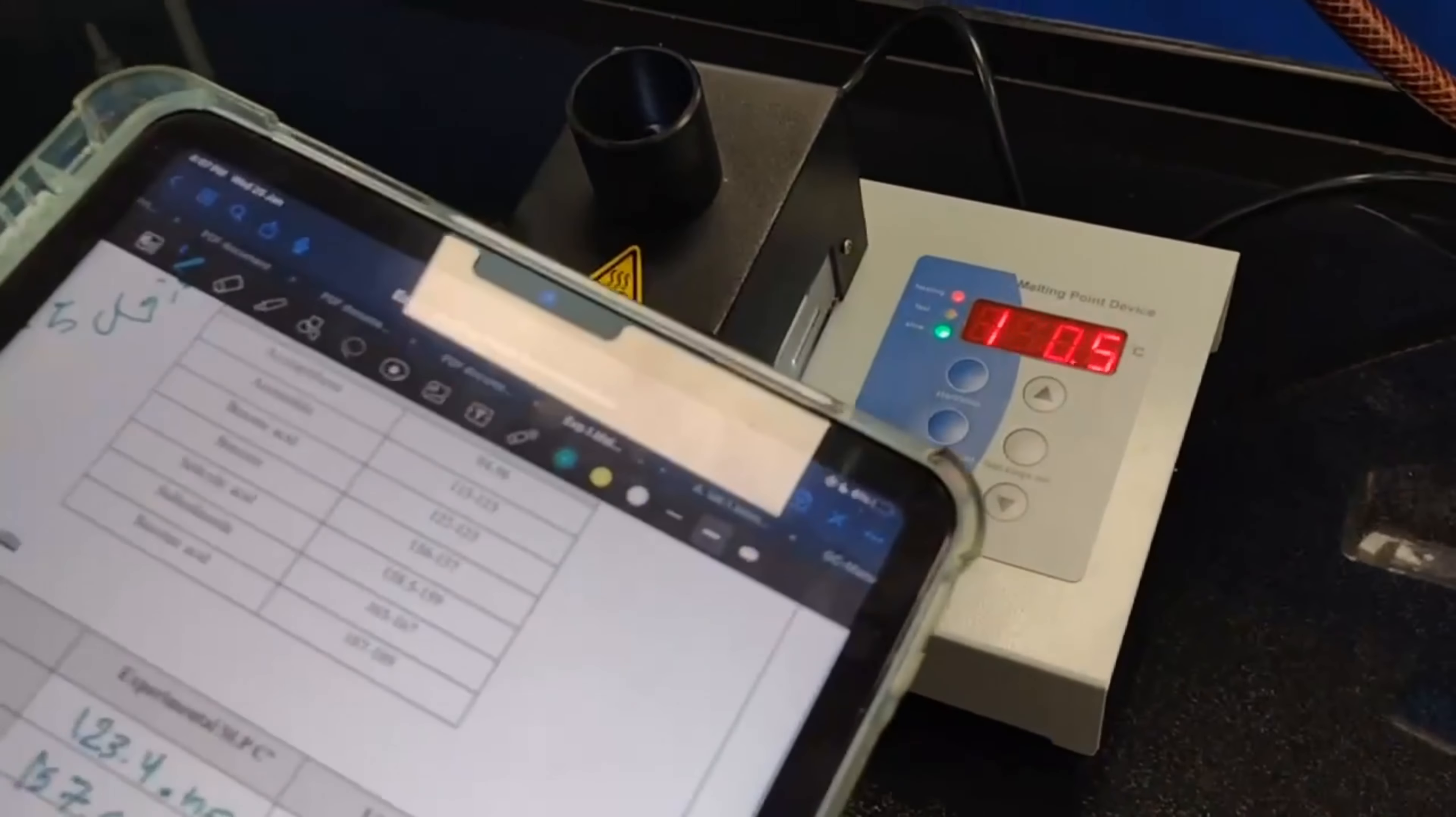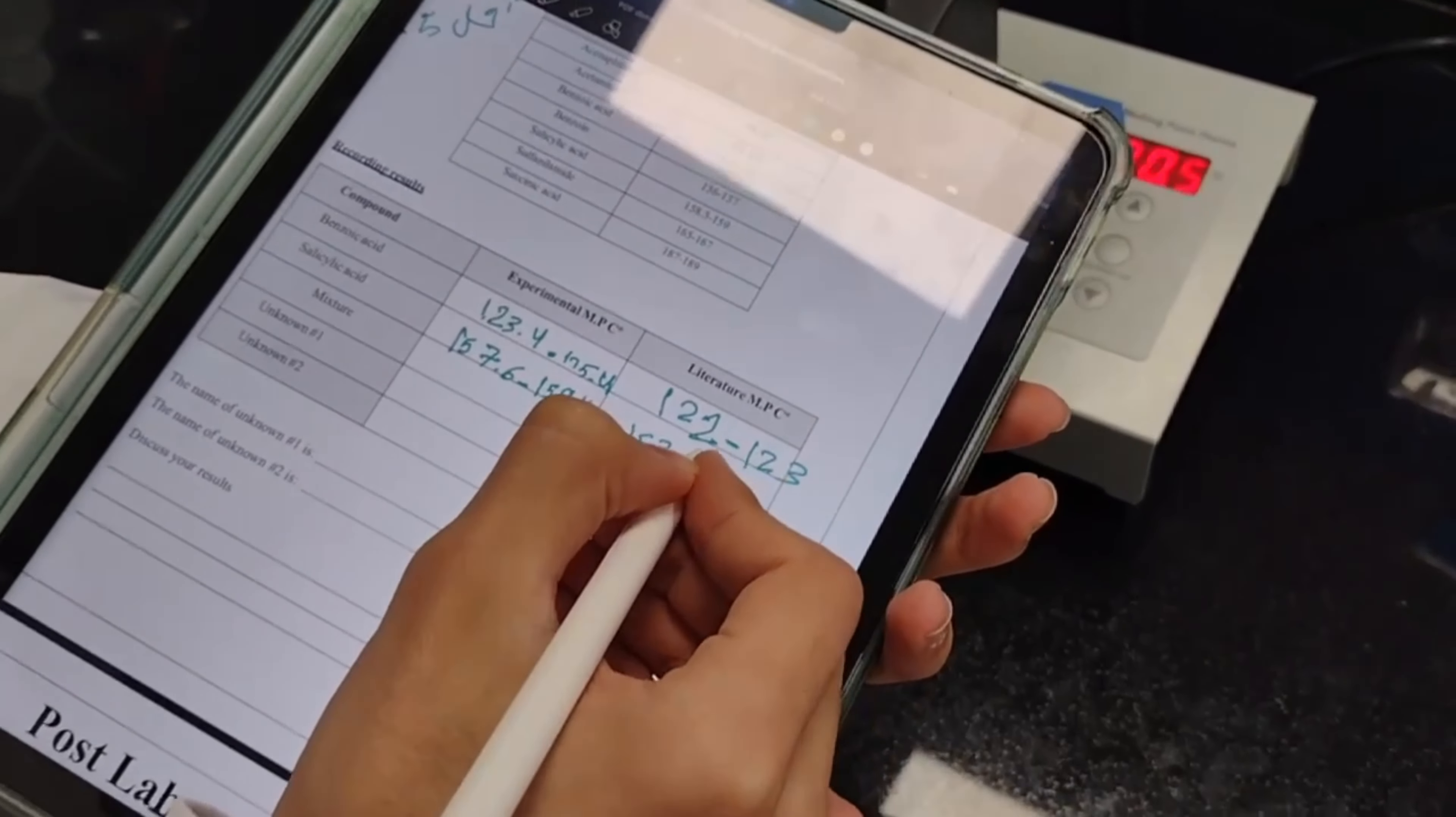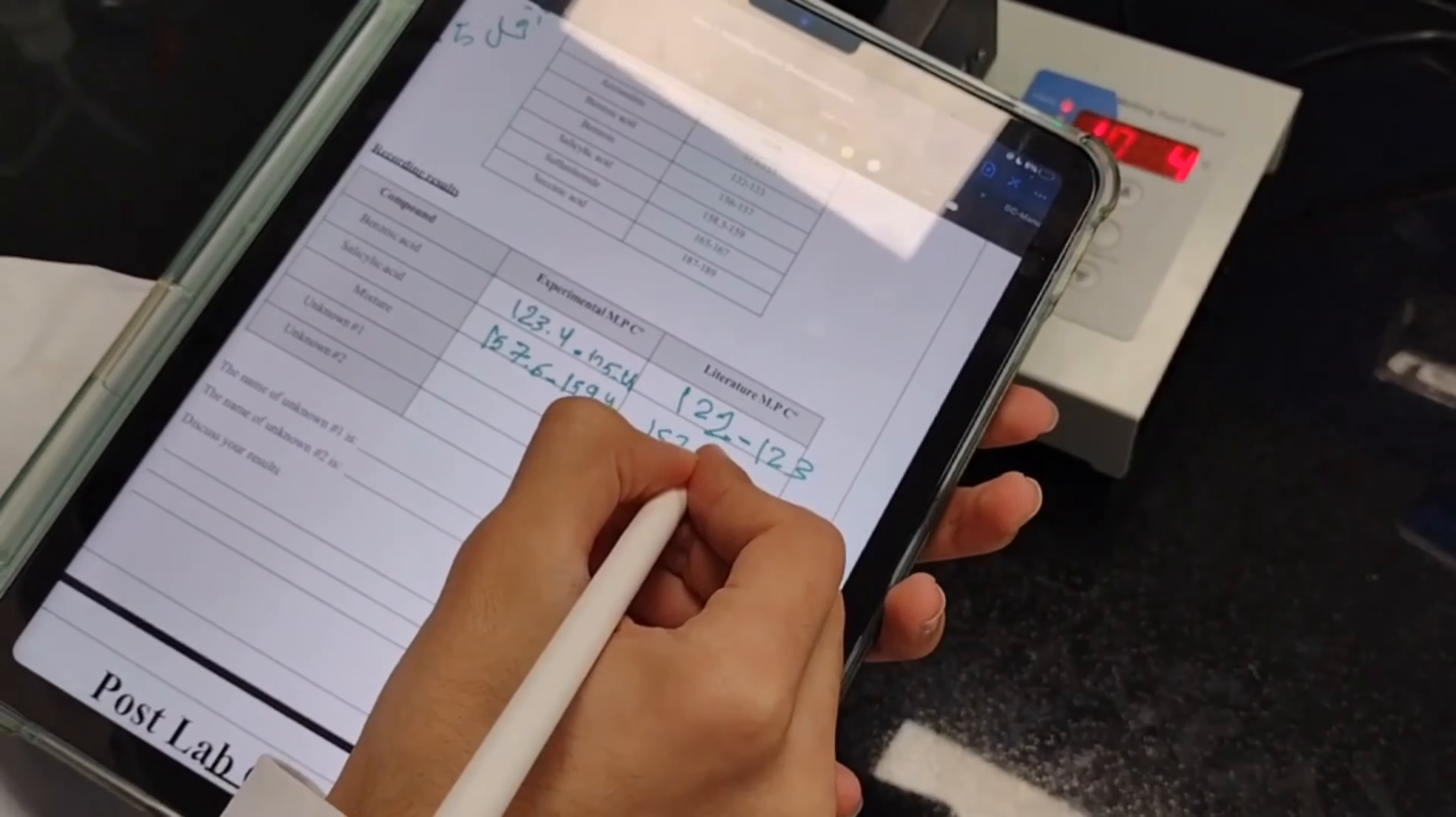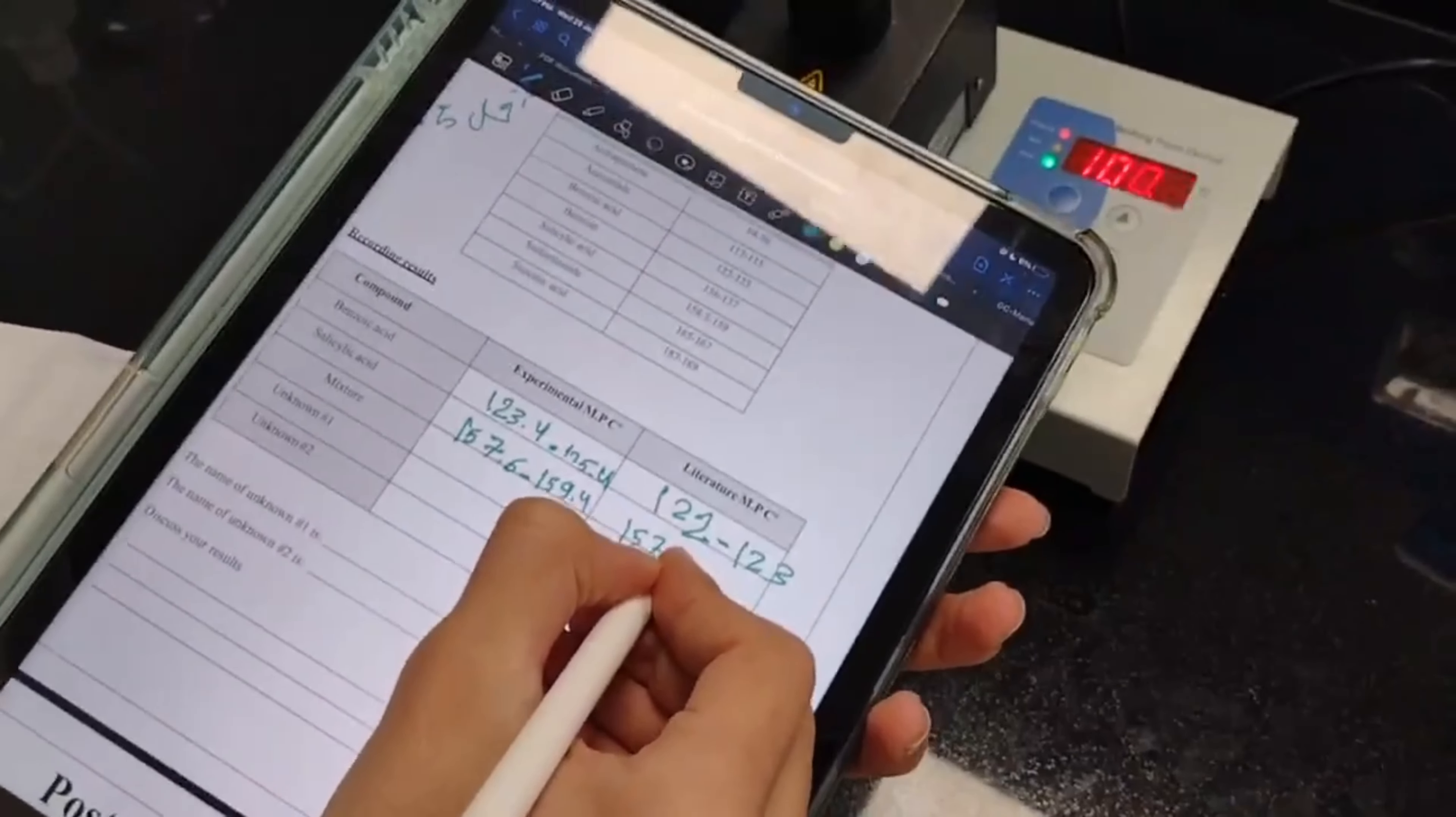And the temperature was set to fast speed until 115 for both of the unknowns. And here is the first unknown melting.